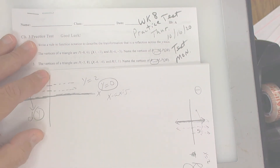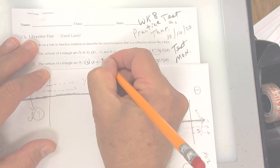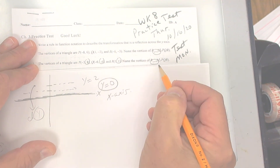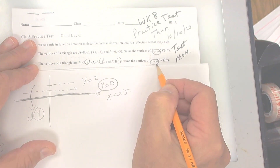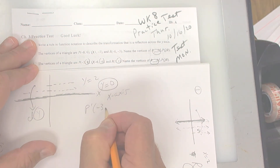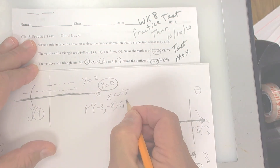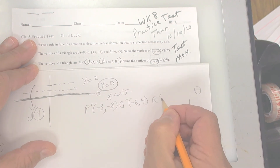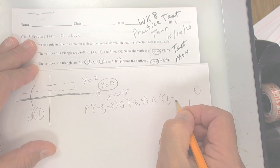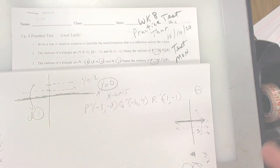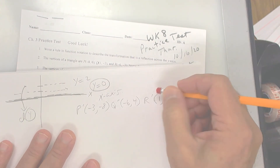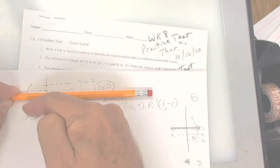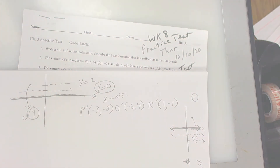For number 3, you're going to change all of the y values because you're reflecting over the x-axis — which is what y equals 0 is. So P prime is going to be negative 3 and negative 8. Q prime is going to be negative 6 and 4. And R prime is going to be 1 and negative 1. Y equals 0 is the x-axis, and in order to flip over the x-axis you're going up and down, so you change the y.